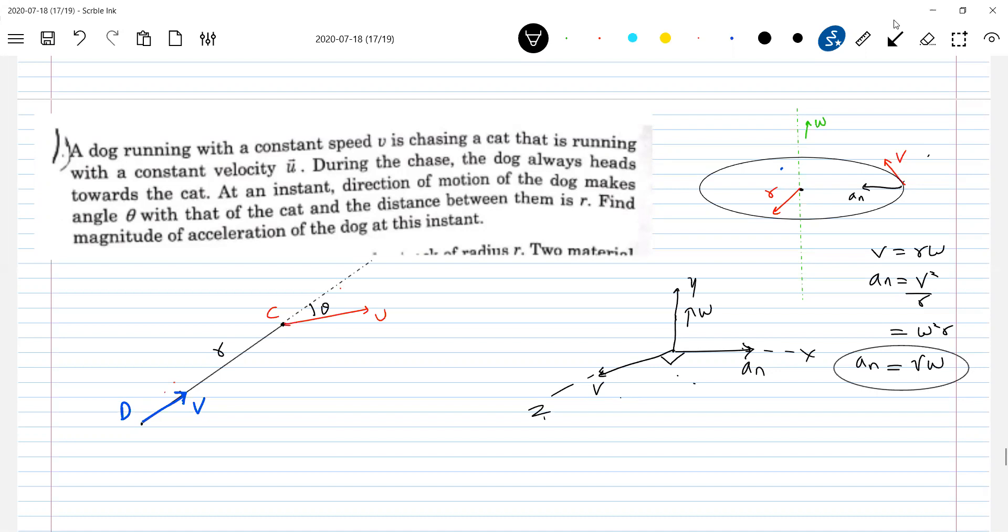And what is a_n? a_n equal to v into omega. That acceleration is what is asking actually, should have said radial acceleration or central acceleration. And they're moving with a constant speed. So no question of tangential. That's why you called only acceleration. The speed of the dog and cat are constant. I'll give the reasons now. Why there's no tangential.